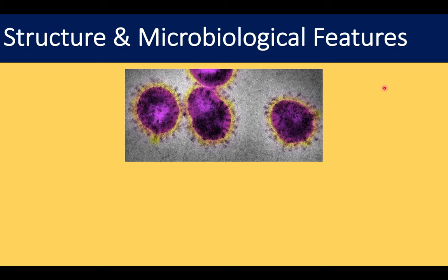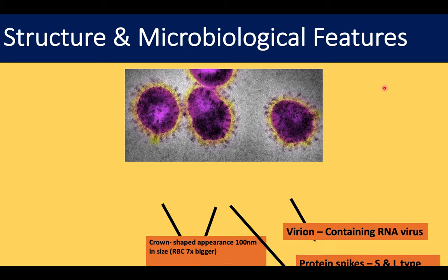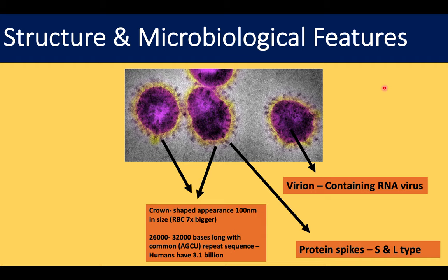On screen you can see an electron microscope image of COVID-19. The coronavirus name itself comes from Latin corona, meaning crown. It is around 100 nanometers in diameter — extremely small, which is why an electron microscope is needed to see it. A red blood cell is about seven times bigger.